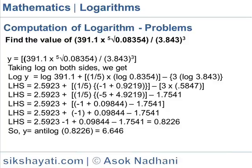So the left-hand side equals 2.5923 plus one-fifth of log 0.08354, which is minus 1 plus 0.9219, minus 3 times log 3.843, which is 0.5847, so you have 3 times 0.5847.